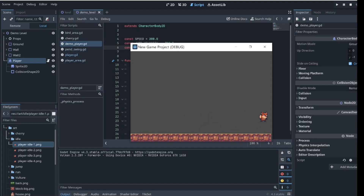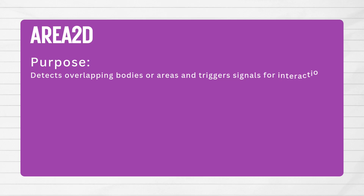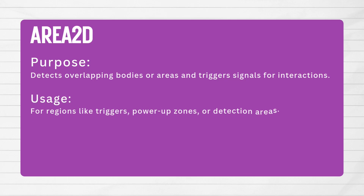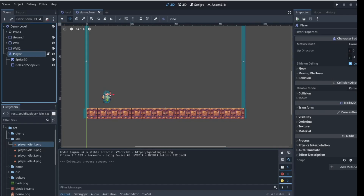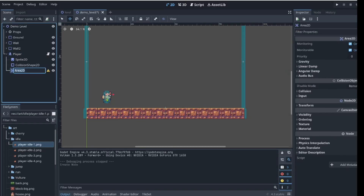Now let's make it so the player can collect the cherry, and to do this we'll use an Area2D node. An Area2D node detects overlapping bodies or areas and triggers signals for interactions. It can be used for power-up zones, triggers, or detection areas, and can emit signals like body_entered and area_entered. For the player to detect collisions with the cherry, with the player node selected, I'll add an Area2D node and a collision shape to it, and rename the Area2D node to demo player area.